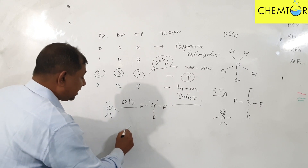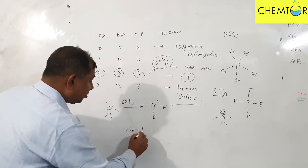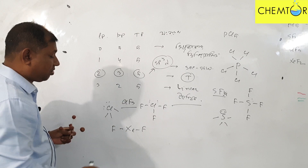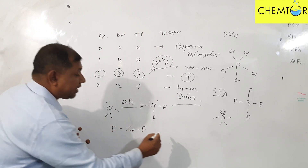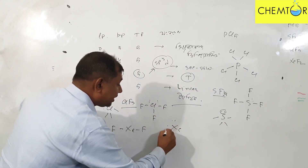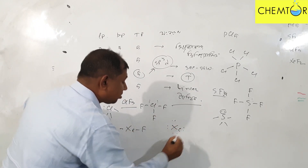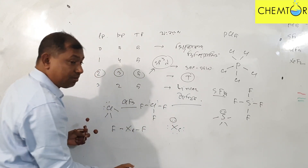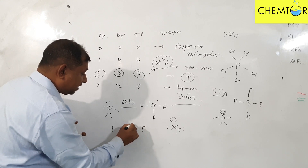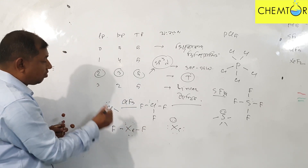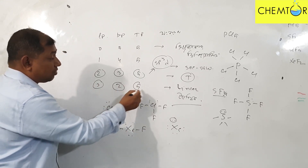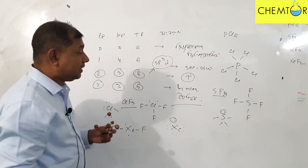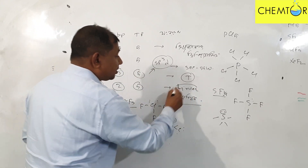The next example is XeF2, xenon difluoride. It has 3 lone pairs and 2 bond pairs, giving a total of 5 electron pairs. With 3 lone pairs and 2 bond pairs, the shape is linear.